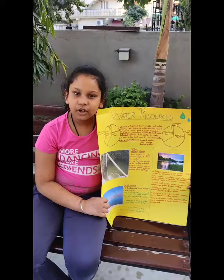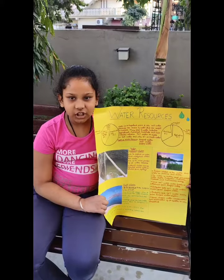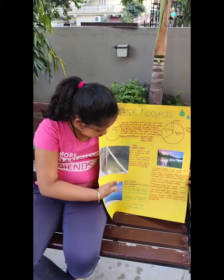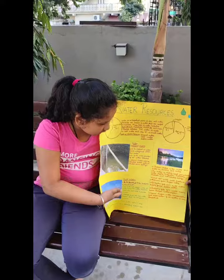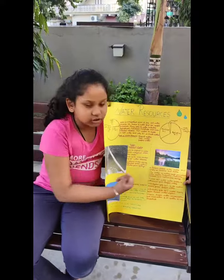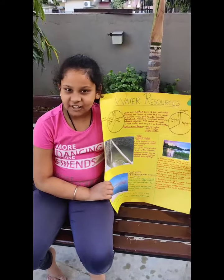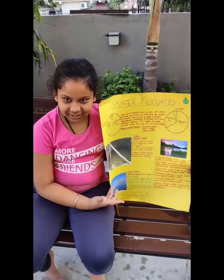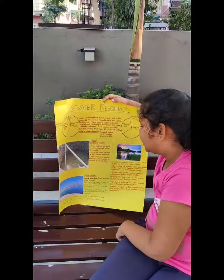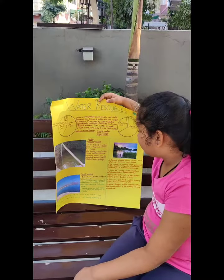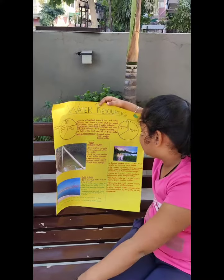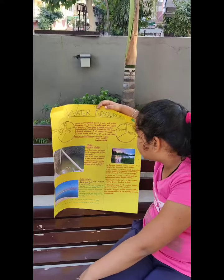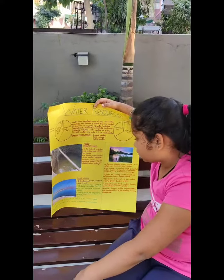Types of water resources are underground water, salt water, and surface water. Let me explain all of this. Underground water is defined as water found underground within the rocks.